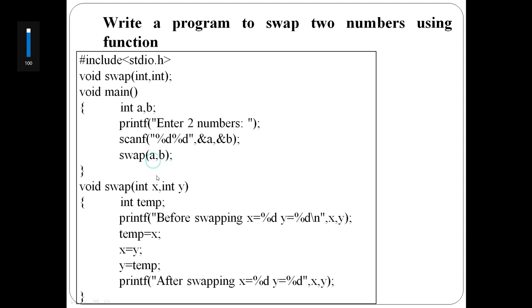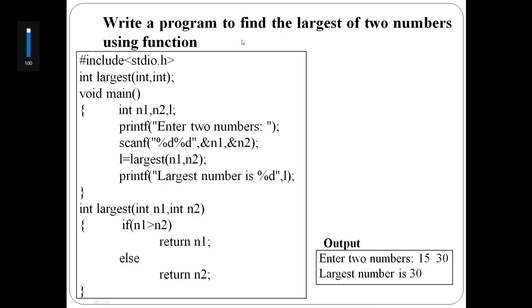So a value 10 goes into x and b value 20 goes into y. First it prints 10 and 20, then after swapping it displays 20 and 10.